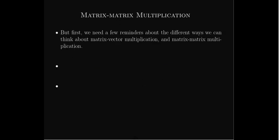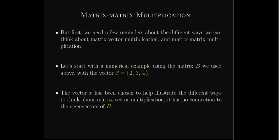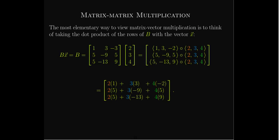But before we do that, let's do some review about matrix-vector and matrix-matrix multiplication. We're going to use the same matrix B and pick a vector x with entries 2, 3, 4. This vector x has no connection to the eigenvectors or eigenspaces — it's just chosen to help illustrate how we can view matrix-vector multiplication. Generally, the way we do matrix-vector multiplication is we take a dot product of the row with that column, and that gives us the entries in the product.